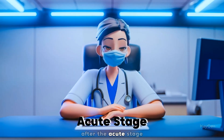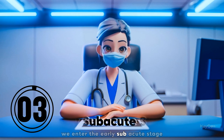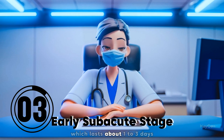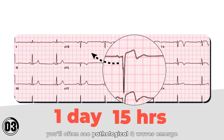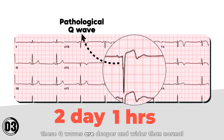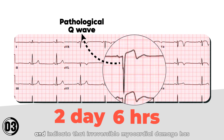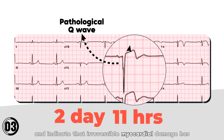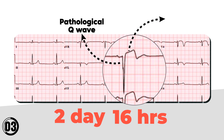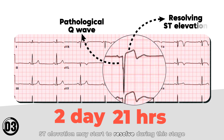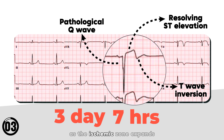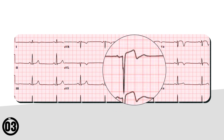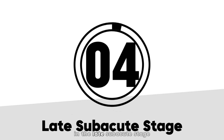After the acute stage, we enter the early subacute stage, which lasts about 1 to 3 days. At this point, you'll often see pathological Q waves emerge. These Q waves are deeper and wider than normal and indicate that irreversible myocardial damage has occurred. ST elevation may start to resolve during this stage, but new T wave inversions can appear as the ischemic zone expands.